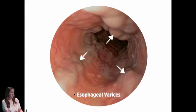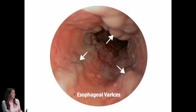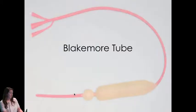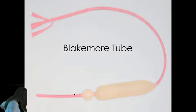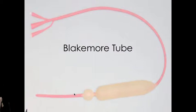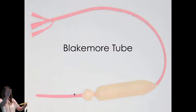Now let's talk about the Blakemore tube. This is something I always just read about and had no idea where to find one. We actually have one in the resuscitation bay now. I was able to get one from Central Supply. This is what it looks like — two ends, one goes in the stomach and one stays outside.